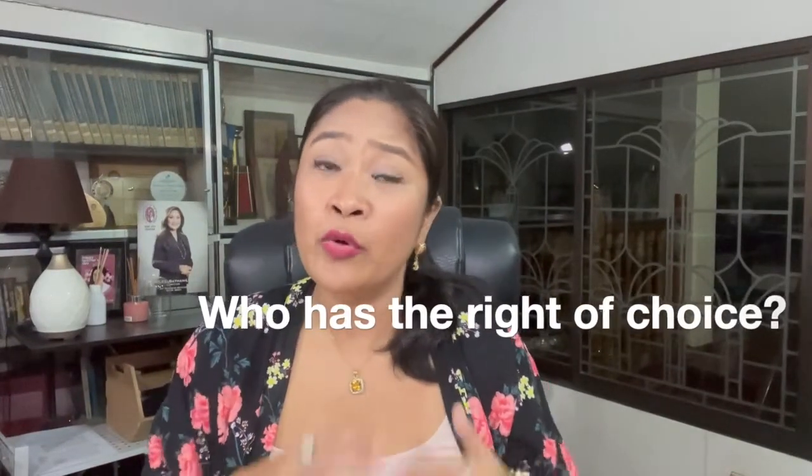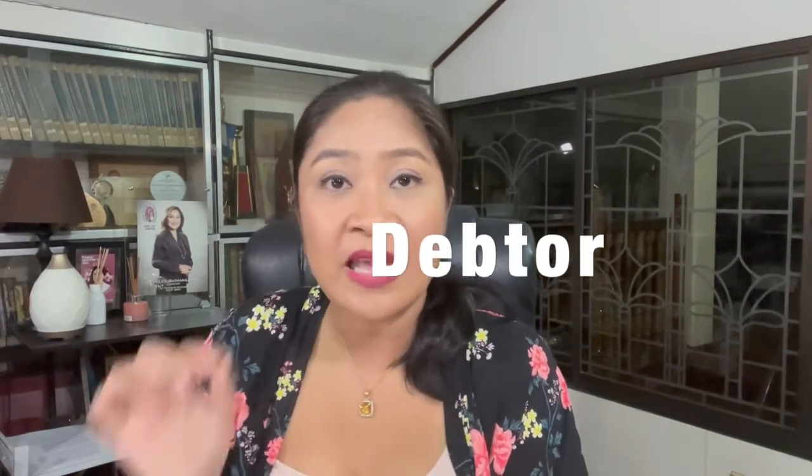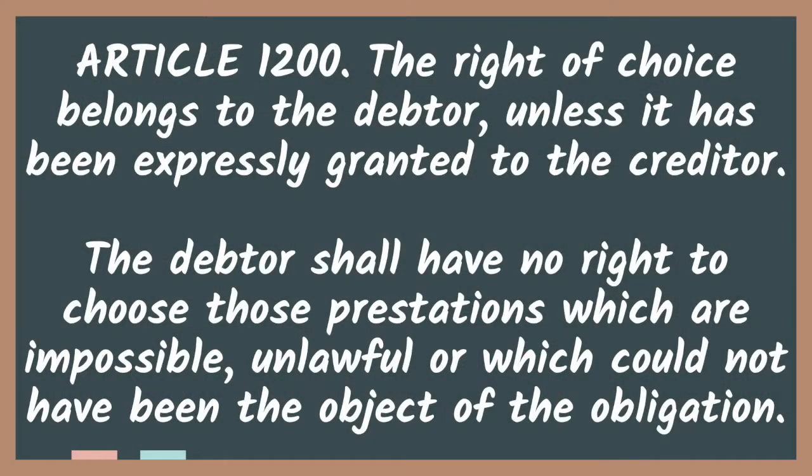Now, who has the right to choose which prestation will be fulfilled or which object will be delivered by the debtor? The law tells you that the right of choice belongs to the debtor. That is found under Article 1200 of the Civil Code. It says the right of choice belongs to the debtor unless it has been expressly granted to the creditor.